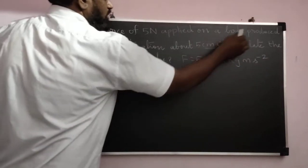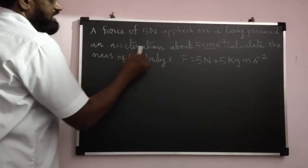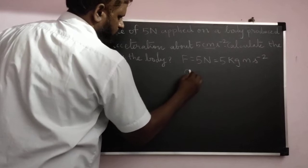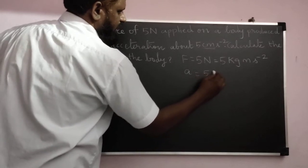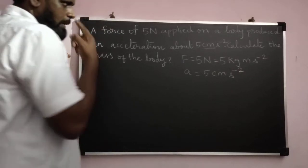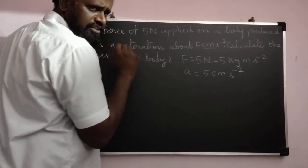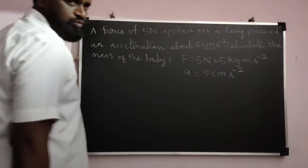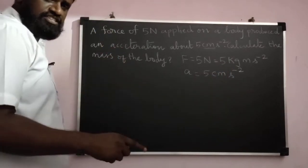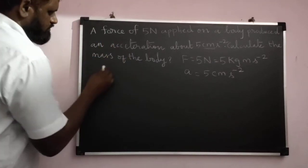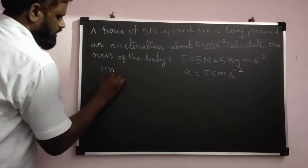Apply on a body that produces an acceleration of about 5 centimeter second power minus 2. So the acceleration is 5 centimeter second power minus 2. We know that the unit of acceleration is meter second power minus 2, so we need to change this centimeter into meter.